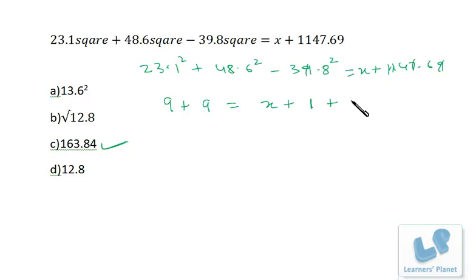And plus digital root of this will be 8 and 3, 11. 11 is 2, 2 squared is 4. Now digital root of left hand side is 9 plus 9, 18, that's 9. So digital root of right hand side should also be 9.